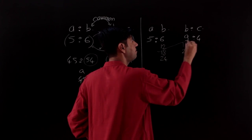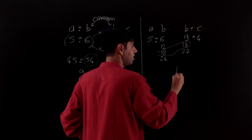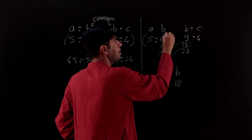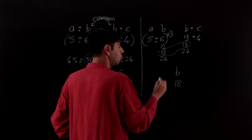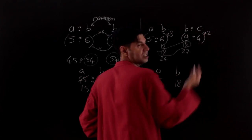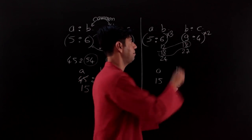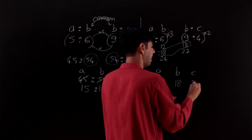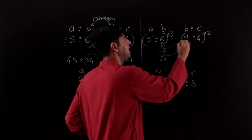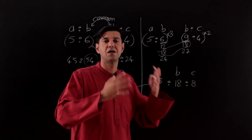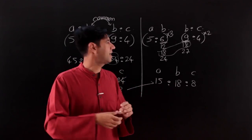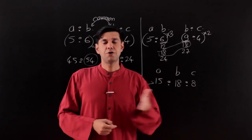The smarter approach: B moves in multiples of 6 in the first ratio (6, 12, 18...) and in multiples of 9 in the second ratio (9, 18...). The common value — the LCM of 6 and 9 — is 18. So make B equal to 18: multiply the first ratio by 3 to get A=15, B=18; multiply the second ratio by 2 to get B=18, C=8. The ratio A to B to C in reduced form is 15 to 18 to 8.